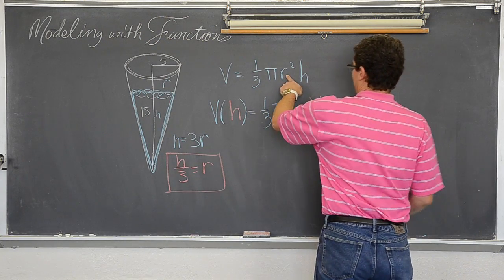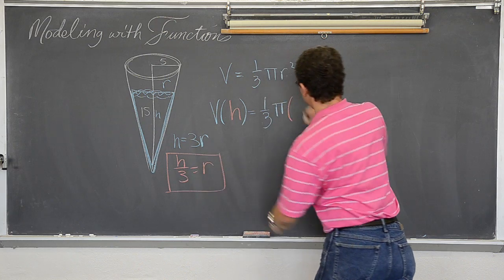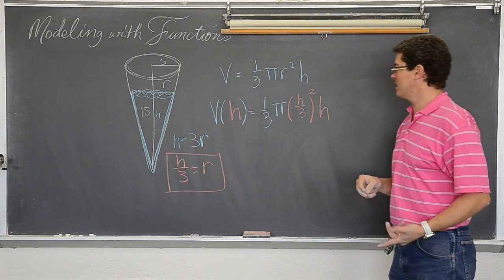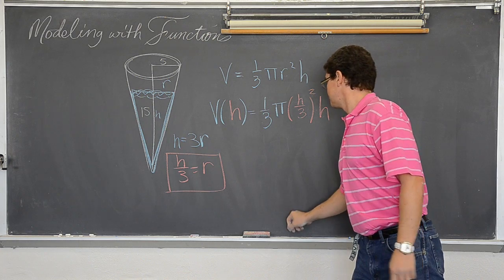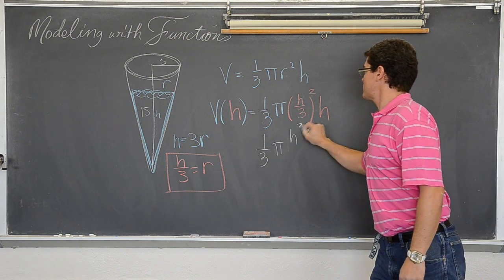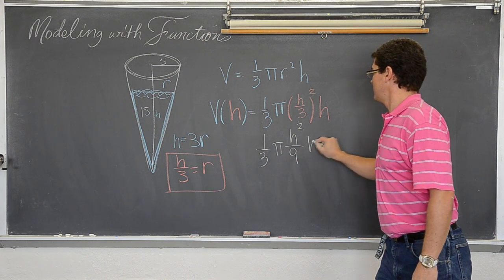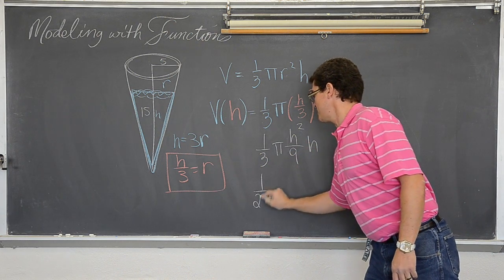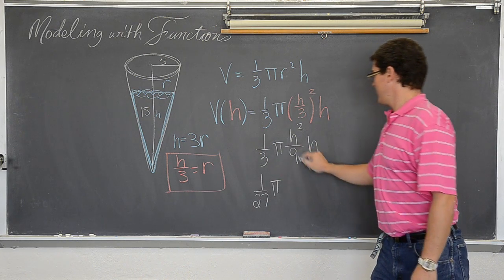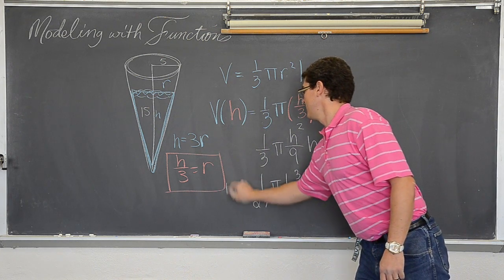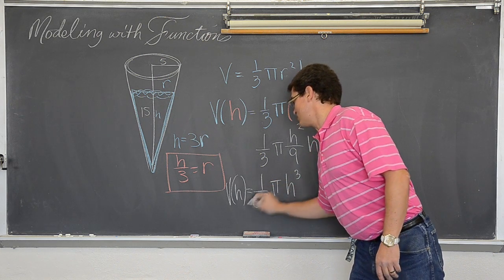So I can take out the r and replace it with h over 3 and remember that it is squared and get 1/3 π h² over 9 h and get 1 over 27 π and then h² times h is h³. And that is volume in terms of h.